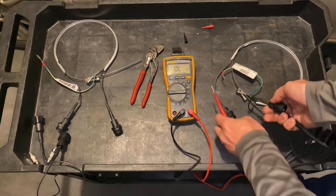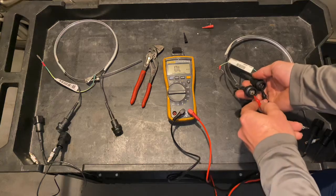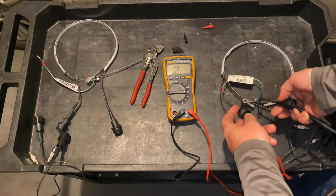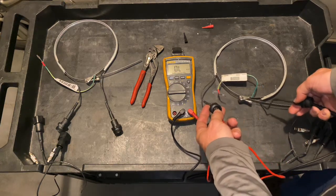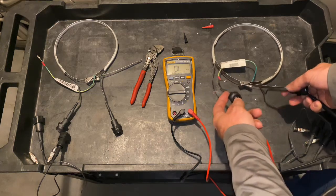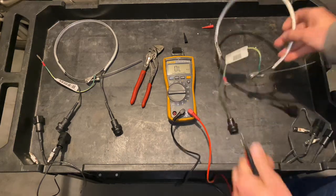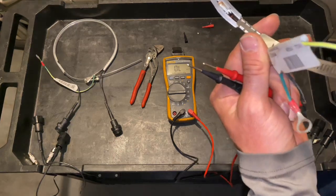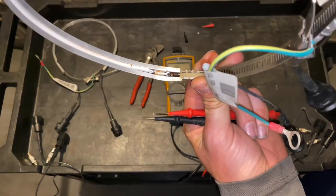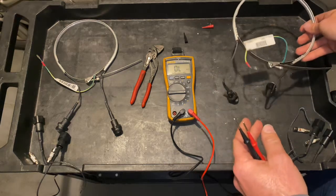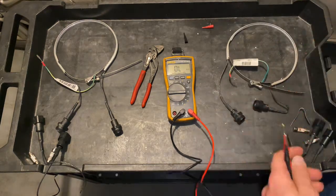So we're going to put our leads going in and going out. As you can see, the meter reads OL, that's because it's actually broken open. As you can see right there, that is actually a broken connection in your heat element.